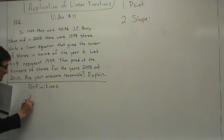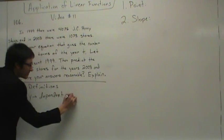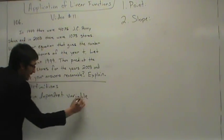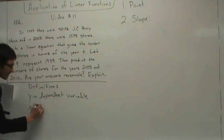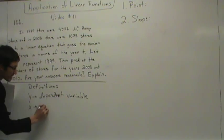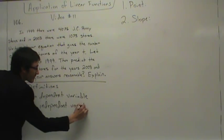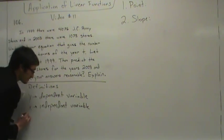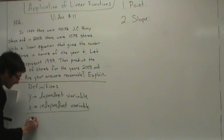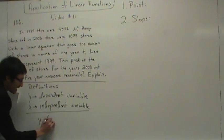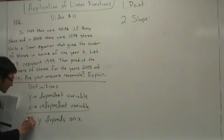Y is called the dependent variable. Now, Y is the dependent variable. What do you think X is called? Hopefully you said independent — yes, independent variable. And the key phrase we're going to use is that Y depends on X.